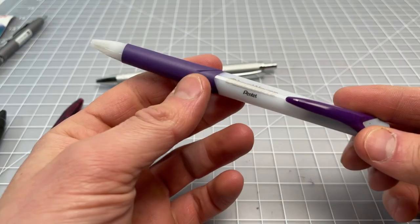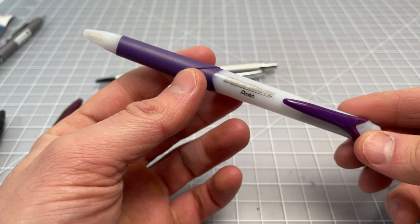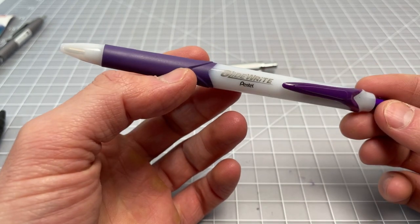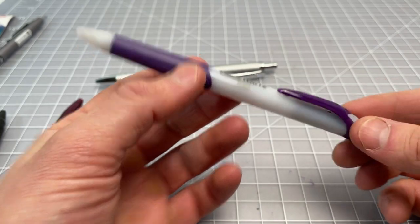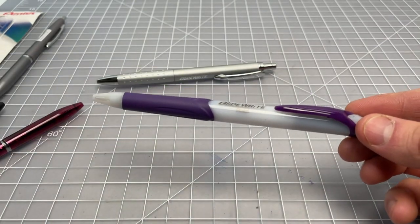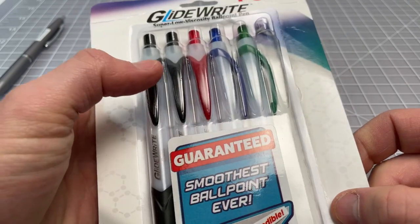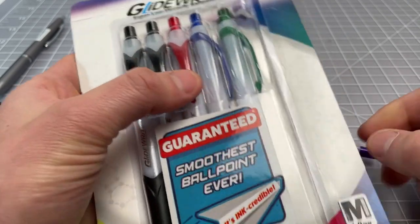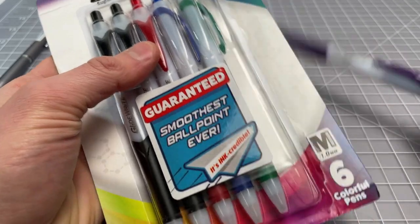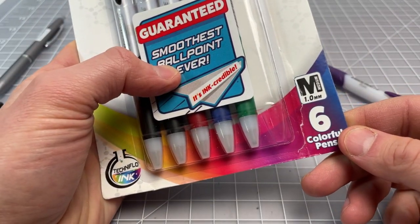The Gliderite is available right now in two different pens from what I've seen. This is the standard Gliderite from Pentel. I bought it in a six-pack, but it's available in a bunch of different packs. You get two black pens, a red, a blue, a green, and the purple. It's a 1.0 millimeter medium.